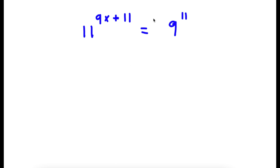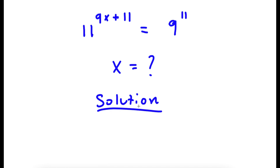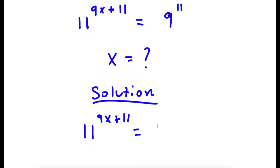In this problem, I have 11 to the power of 9x plus 11 is equal to 9 to the power of 11. So I want to find the value of x here. For my solution, I first start with 11 to the power of 9x plus 11 is equal to 9 to the power of 11.